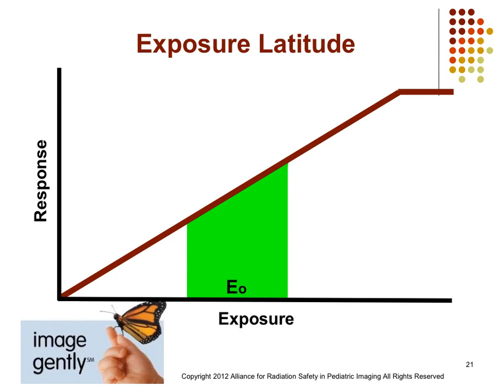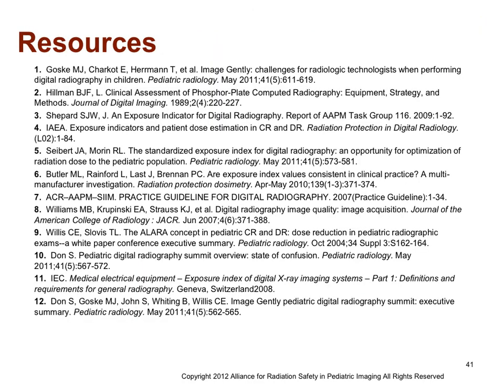Hopefully at this point, you have a sound understanding of some of the basic ideas associated with the differences between screen film radiography and digital radiography, including CR and DR, and can recognize that there are differences in visual appearances and a need to evaluate exposure indicators. In part two of this lecture, we'll start to break down some of those exposure indicator systems. Thank you.